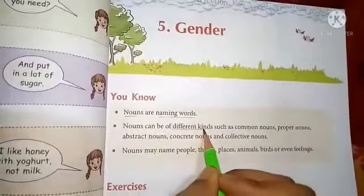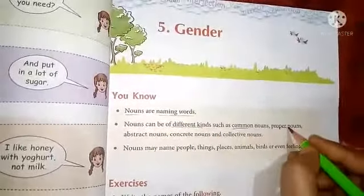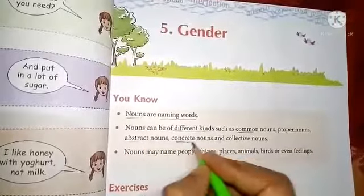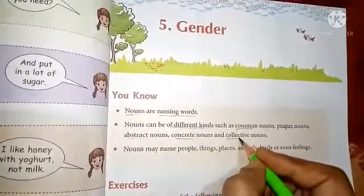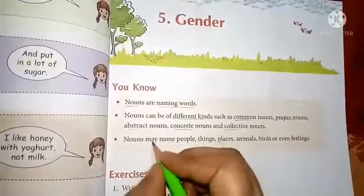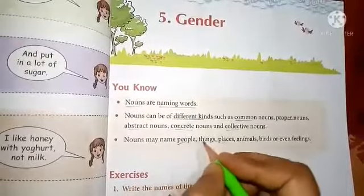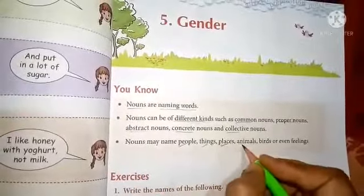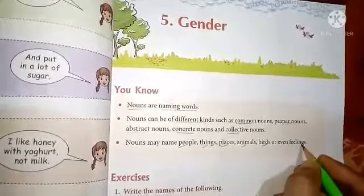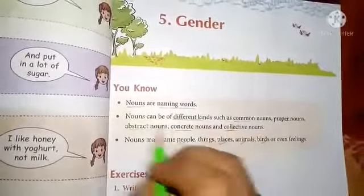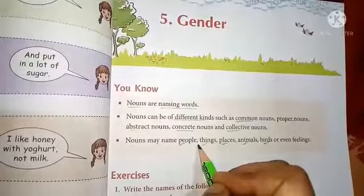Different kinds of nouns are common noun, proper noun, abstract noun, concrete noun, and collective noun. Noun may name people, thing, place, animal, birds, or even feelings. It's all we know before, because we have read nouns in the chapter.